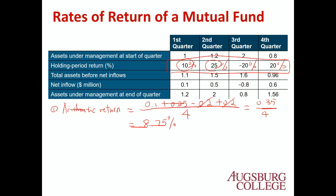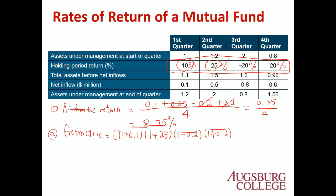Using the same example for the geometric return, we have four returns: (1 + 0.10) × (1 + 0.25) × (1 − 0.20) × (1 + 0.20), all raised to the power of 1 over 4, minus 1, which equals 7.19%. This is the return per period assuming compounded interest.